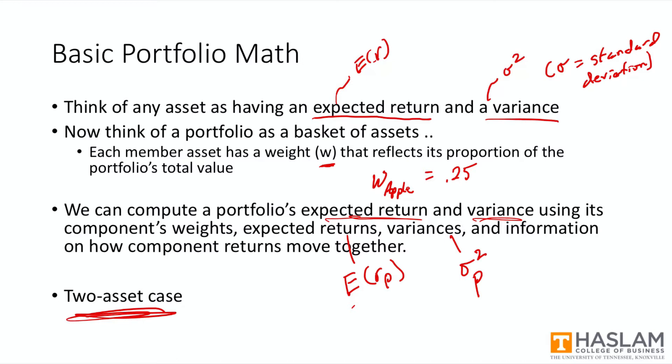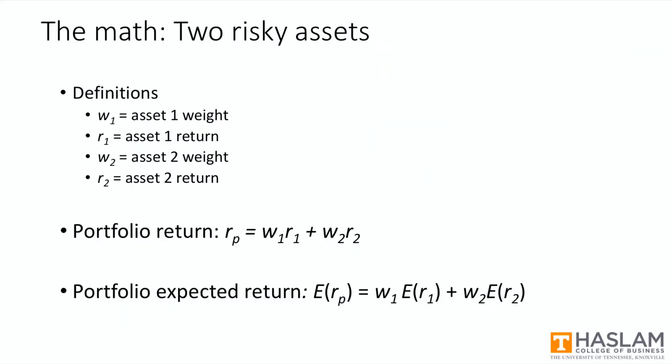Starting with some definitions and notation, we'll just call the assets asset one and asset two. And so we'll have weights for each and returns for each. We'll also take as given that in any portfolios, all weights are going to sum to one. So in this special case of a two-asset portfolio, W2 is equal to one minus W1. In some of our formulas, we might see some substitution going on, but we don't actually write W2. We simply write one minus W1.